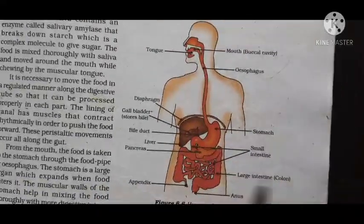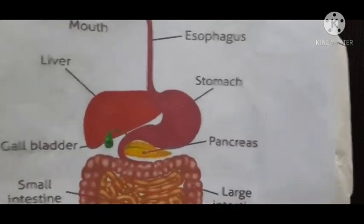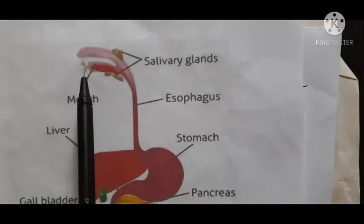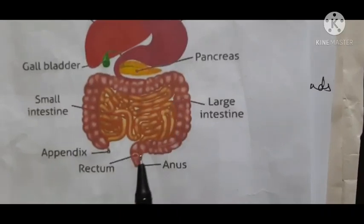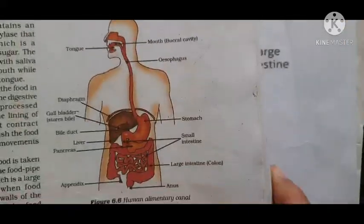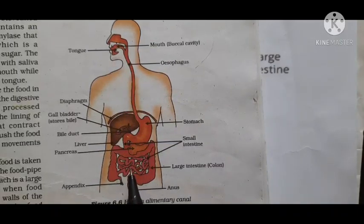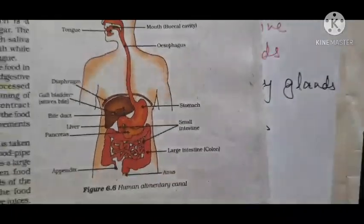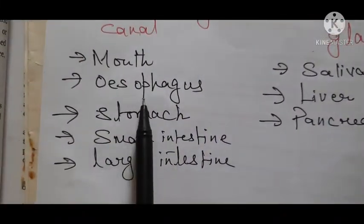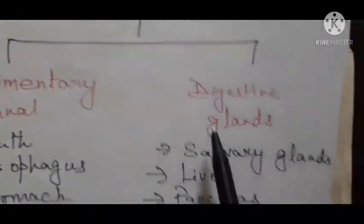You can see in this diagram that it is a long tube which extends from the mouth till the anus. This entire passage from mouth to anus is called the alimentary canal. This alimentary canal consists of organs like the mouth, esophagus, stomach, small intestine, and large intestine.